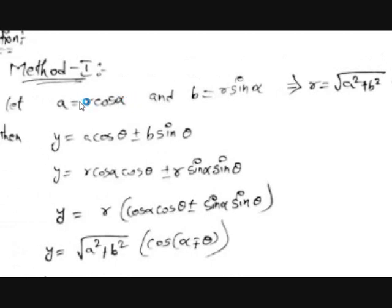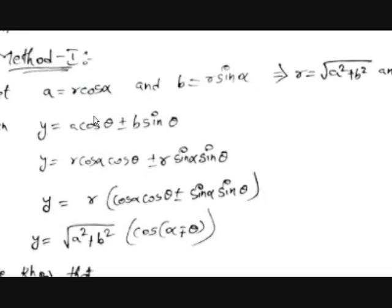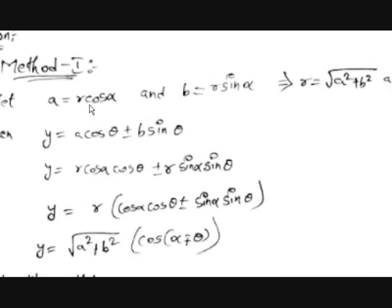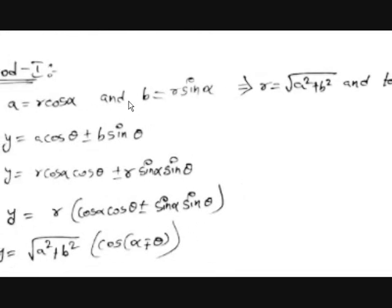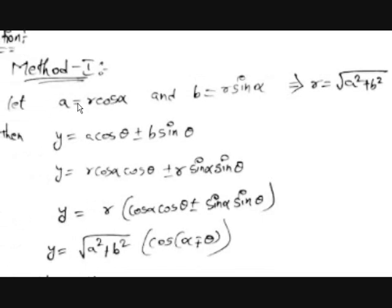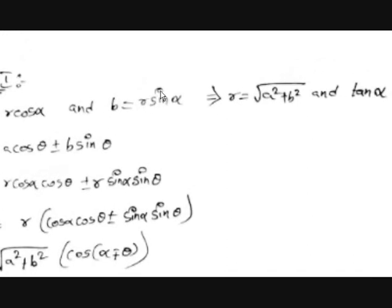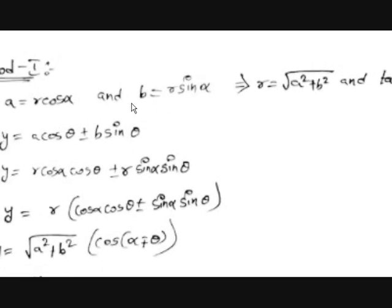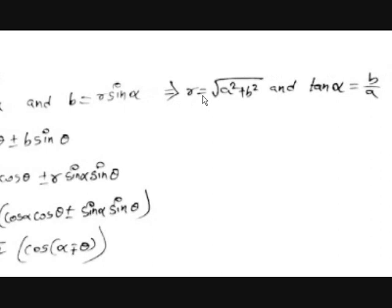We use the substitution: a = r·cosα and b = r·sinα, using α because θ is already in the expression. Squaring and adding: a² + b² = r²(cos²α + sin²α) = r². Therefore r = √(a² + b²).